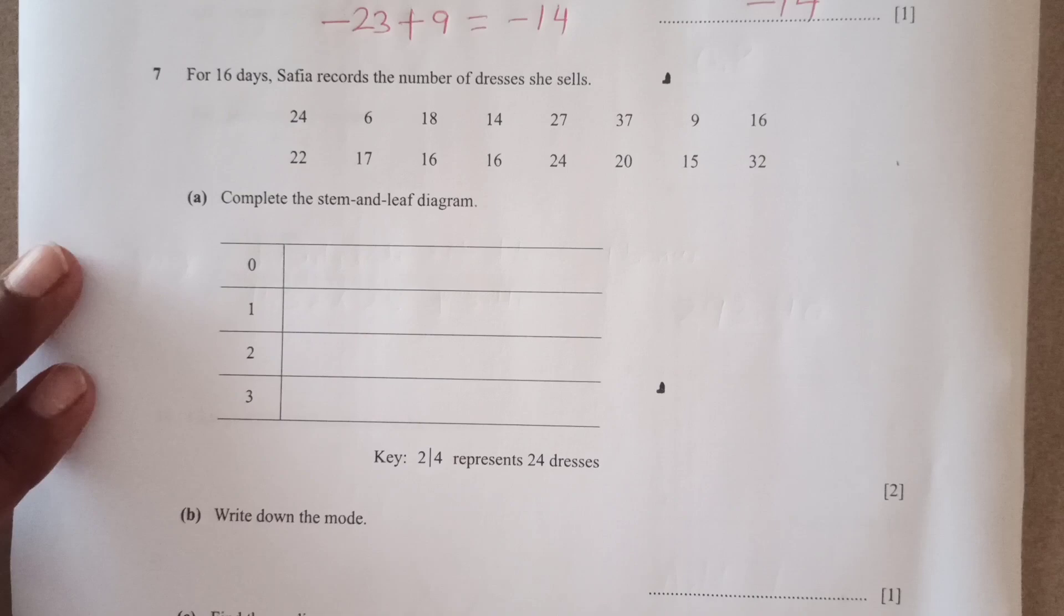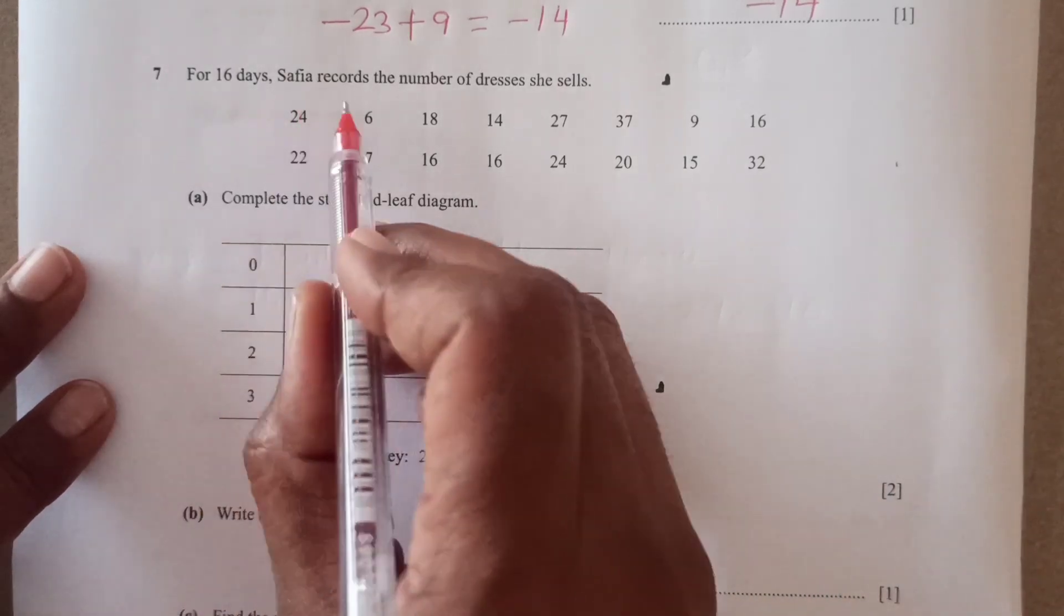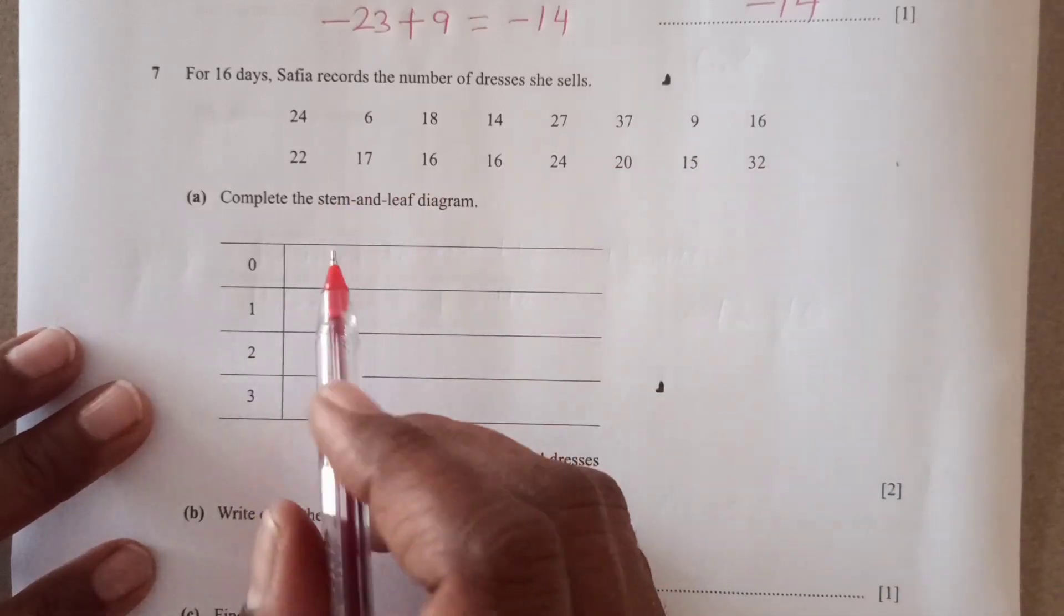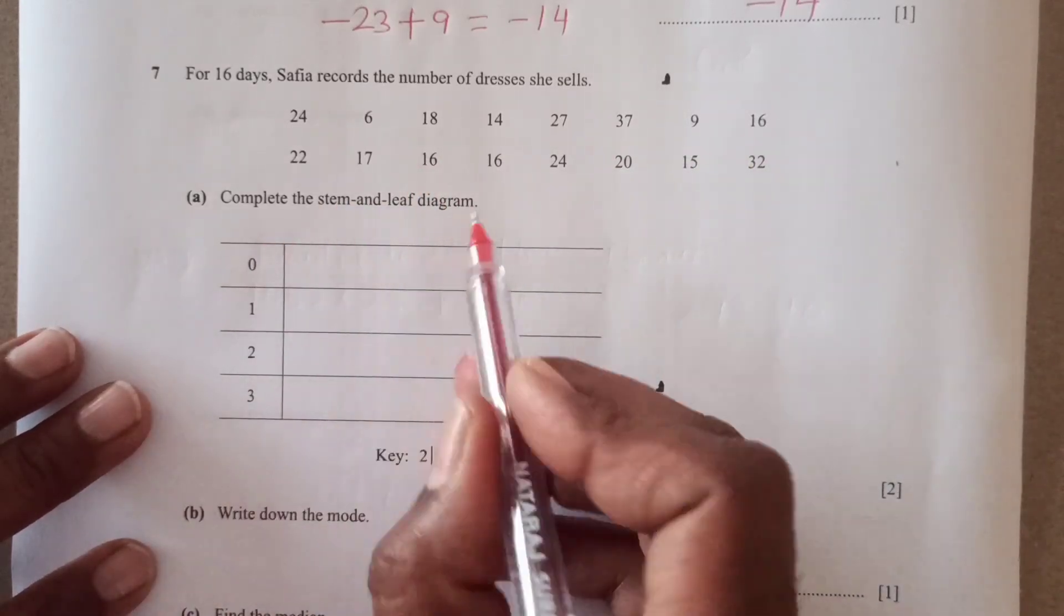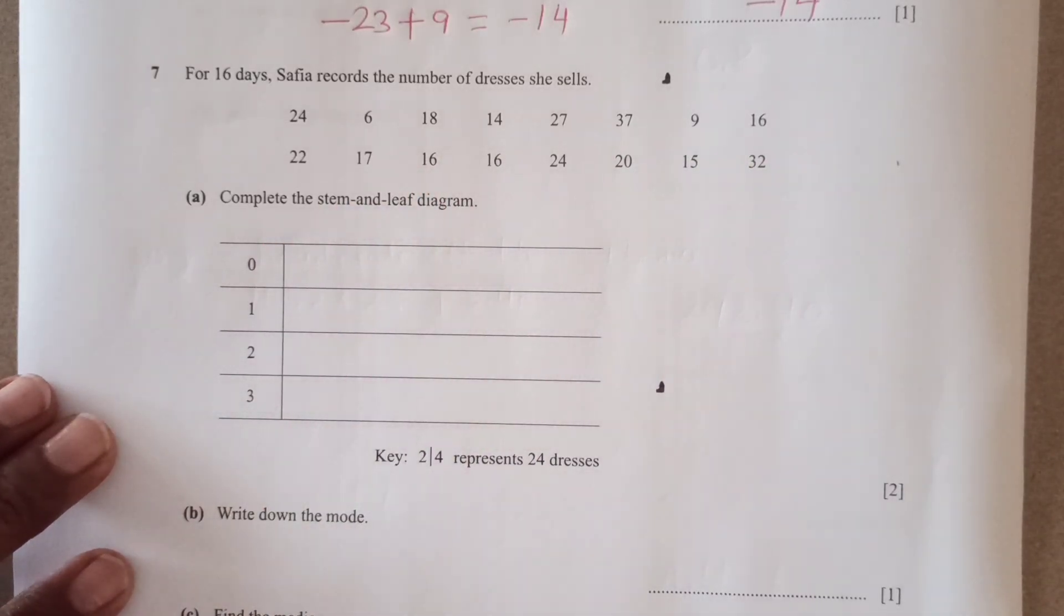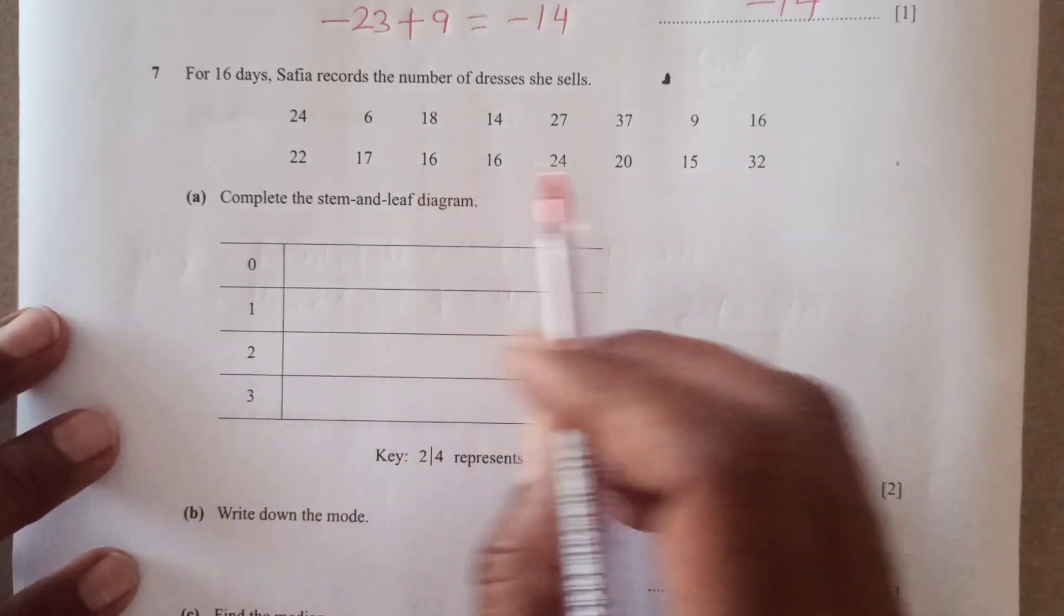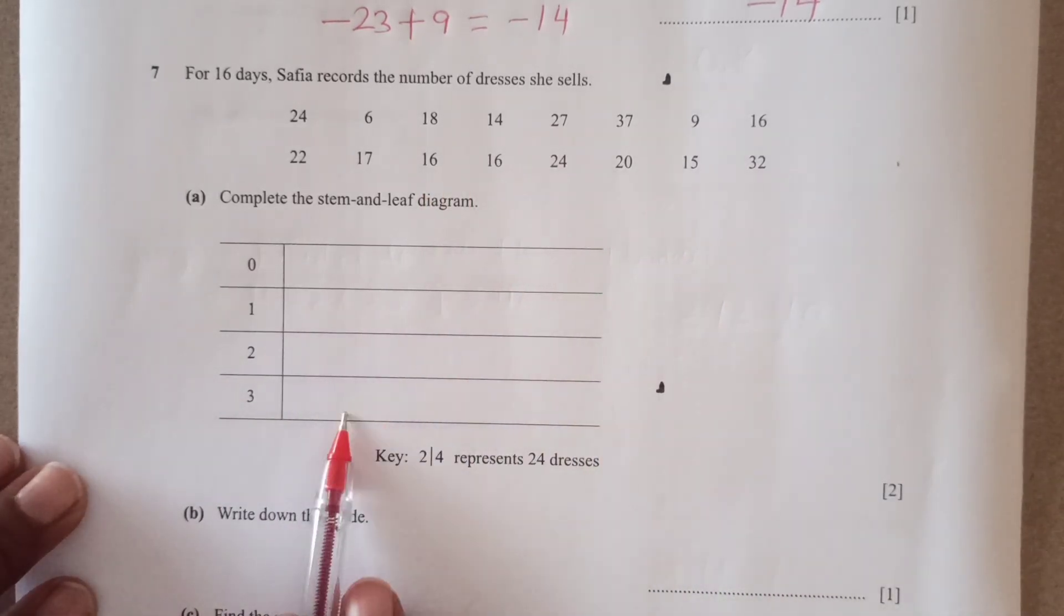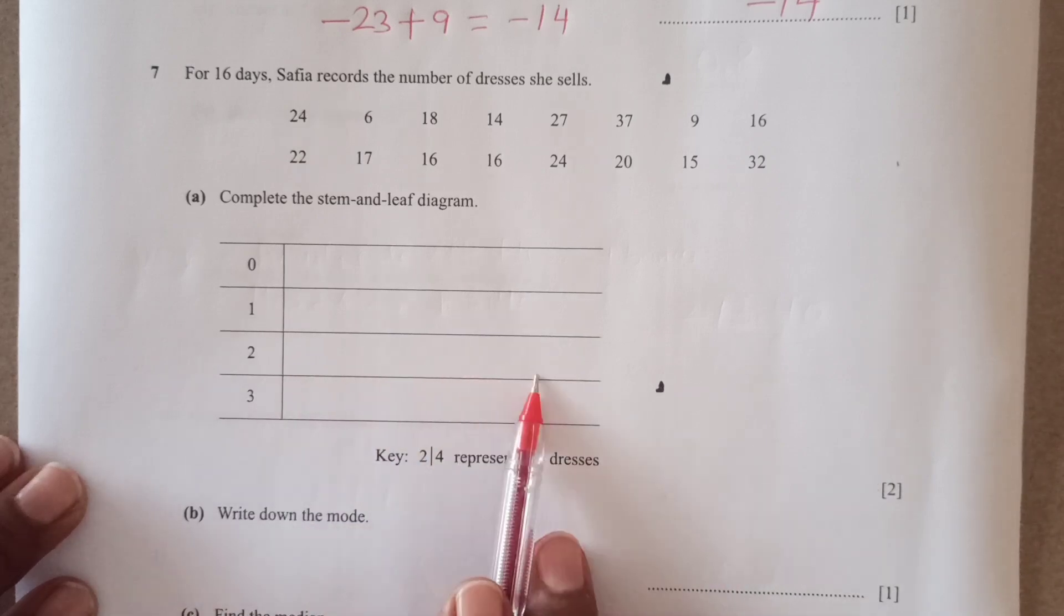Now number seven, for 16 days, Safiya records the number of dresses she sells. Here are all the numbers. Complete the stem and leaf diagram. First of all, we need to write down all these on side because here when you write the final that should be in order, in increasing order.